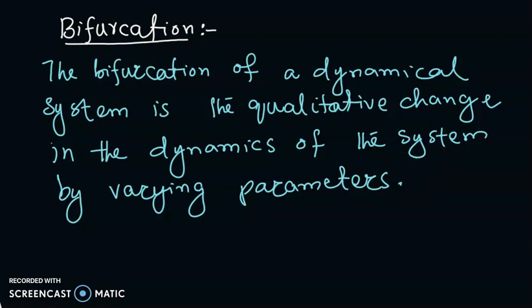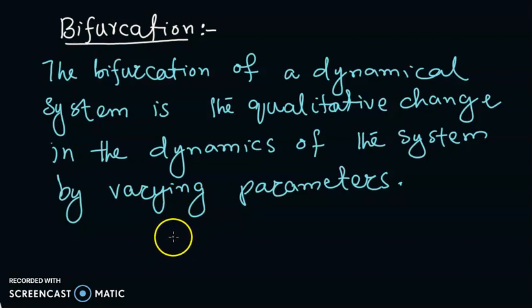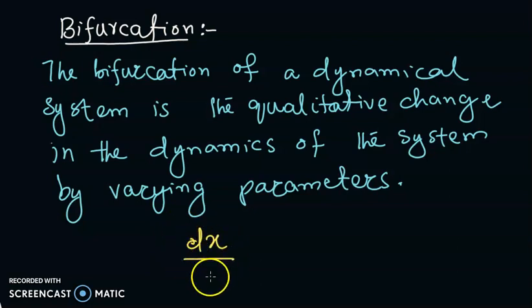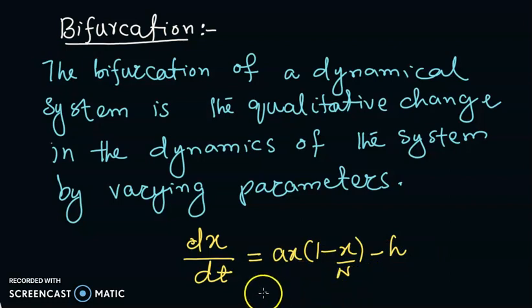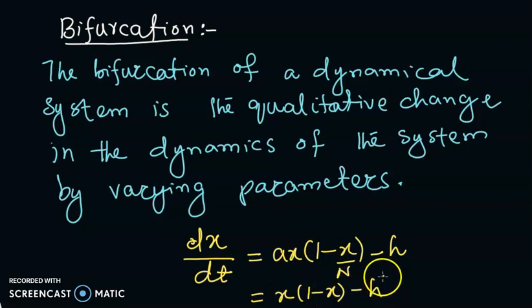If we have a dynamical system, for example, like we had previously in the logistic population model, our dynamical system was dx/dt = ax(1 - x/N) - h. We had fixed a to be 1 and N to be 1, so we had this model. This dynamical system was depending on h, so h was a kind of parameter.